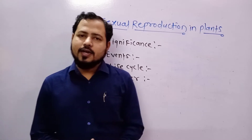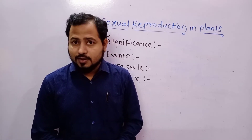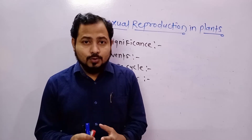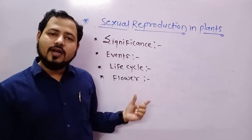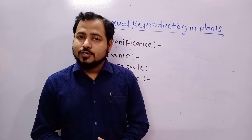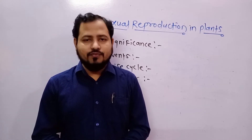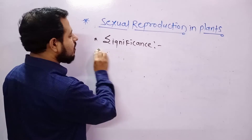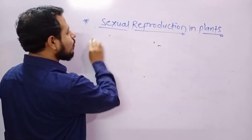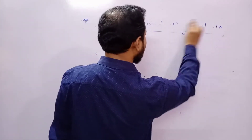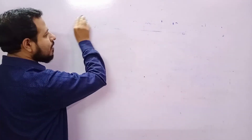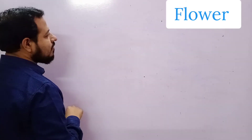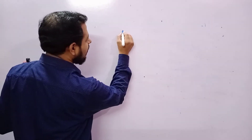Now our target is to understand the structure and function of the flower. Flower means a highly modified reproductive shoot — it is designed for sexual reproduction. A flower is a shoot because it has nodes, and on those nodes are different parts: sepal, petal, stamen, and carpel — these are all the whorls of the flower. Let's have a brief look at the flower to understand its various components.